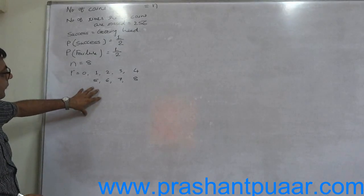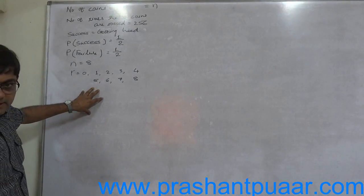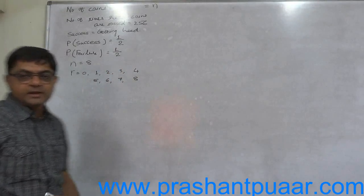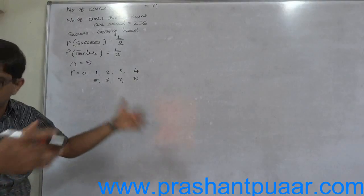So first we have to find probability of all these 9 possible results. And then multiply the probability with 256. The result will be expected frequency of 0, 1, up to N.